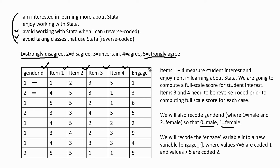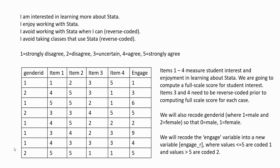Our last variable is the engagement variable. The minimum value is 1 and the maximum value is 9. We are going to recode this engagement variable into a new variable so that values less than or equal to 5 on the original variable are coded 1, and values greater than 5 are coded 2. Now let's go ahead and open up Stata and begin our demonstration.